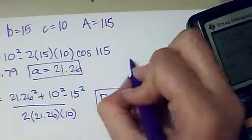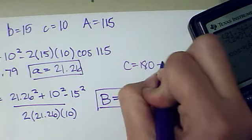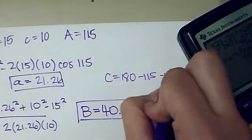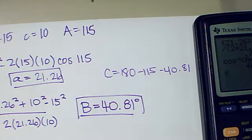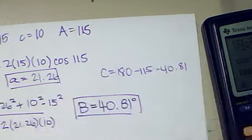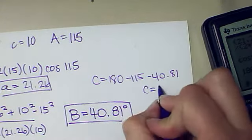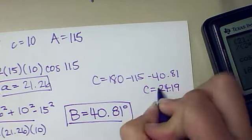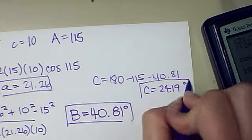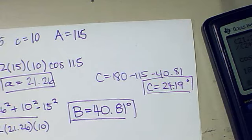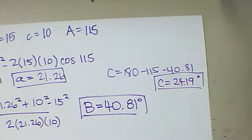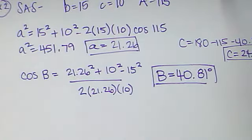Let's find that last angle, C, by doing 180 minus the other two. And 180 minus 115 minus 40.81 is 24.19 degrees. It's probably a good idea to always put degrees when we're talking about an angle so that I know the difference between your angles and your sides. And then we've solved that triangle.